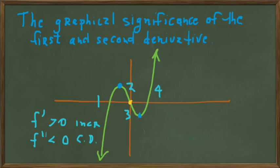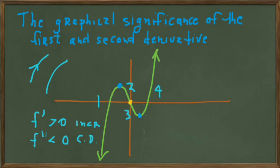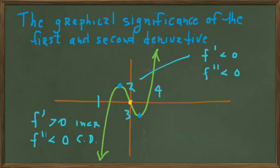In region one, the graph is increasing as we move left to right, and it is bowl shape down, so this is the shape of increasing concave down. When we combine first and second derivative information, increasing is defined in a specific way: increasing with this down-curve shape. Region two is decreasing concave down — the graph is decreasing with a bowl shape down, giving it this shape.